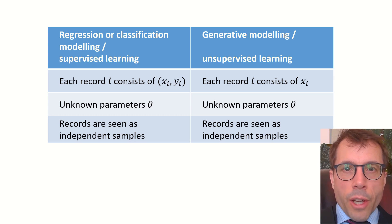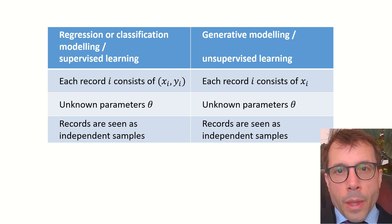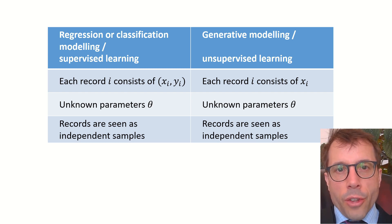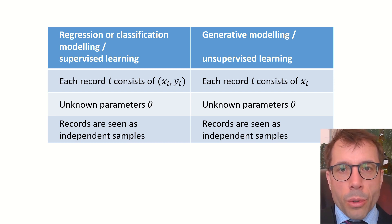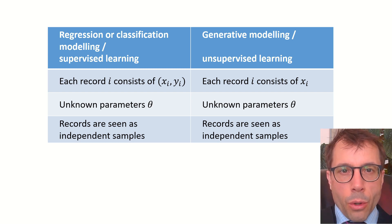The independence assumption isn't crucial, by the way. If you believe the records should not be modelled as independent, you just need to write down a likelihood function for non-independent random variables. There are lots of examples in the extended notes for this course on the course web page, but we won't need any of this until we get to advanced models in the last week of the course.